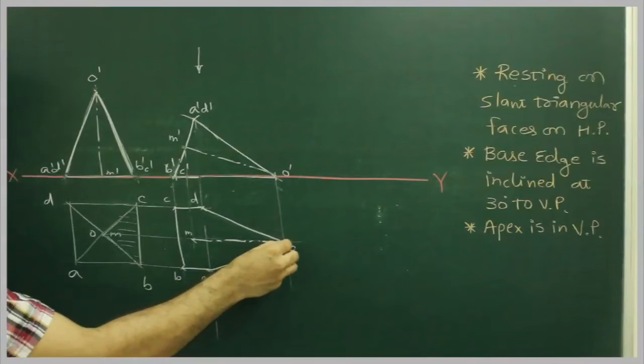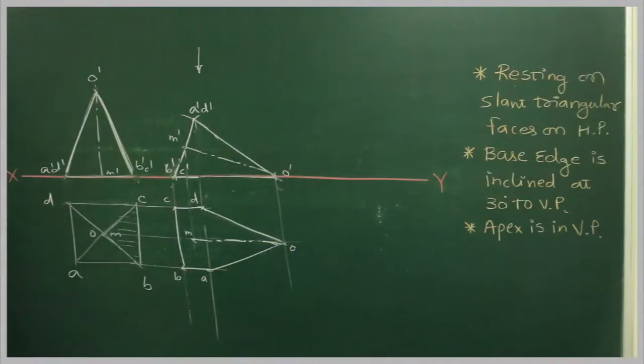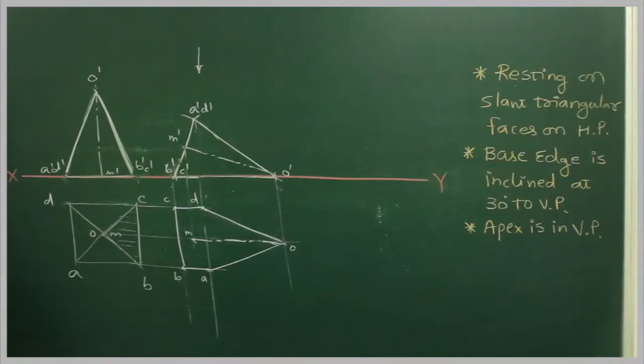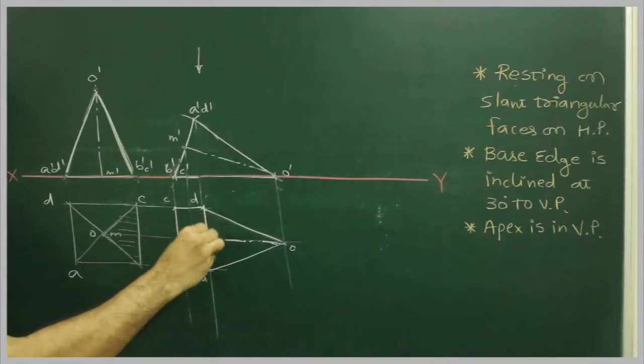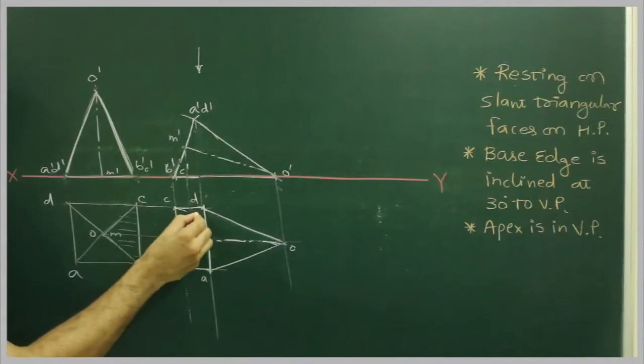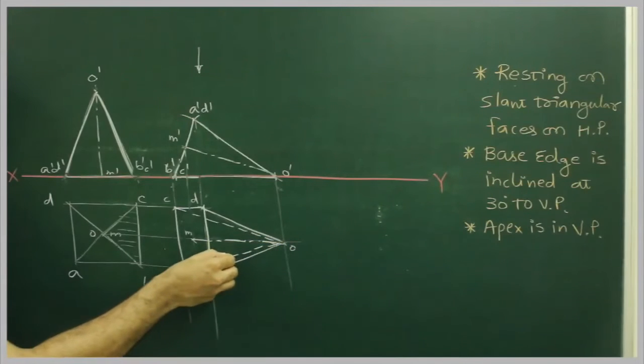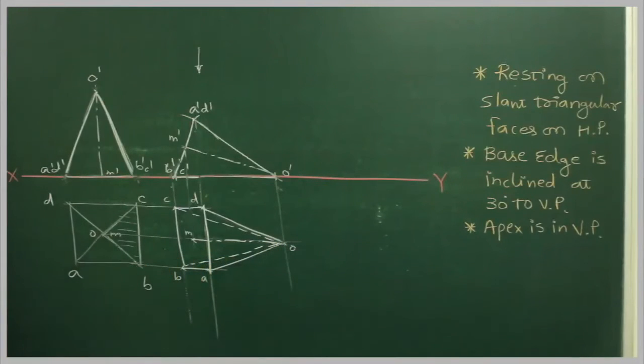Now we are talking about the dark and dotted. When you see from the top, when observer will see from the top, A'B' is nearer to observer, so A'D' will be dark, right? Then O'C' will be dotted, O'B' will be dotted. Why? Because it is away from observer.